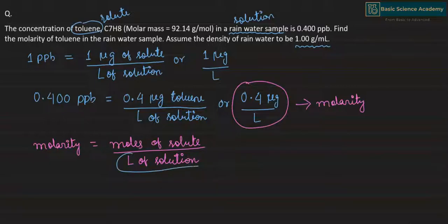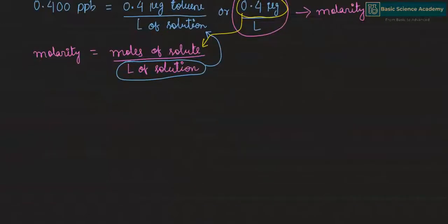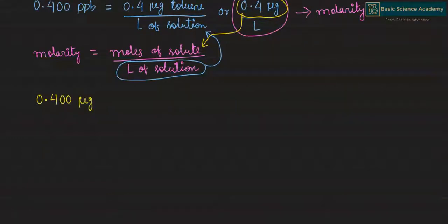We already have liters of solution in the denominator. The only thing we have to convert is 0.400 microgram to moles of solute, so we need to convert 0.400 micrograms to moles of toluene.